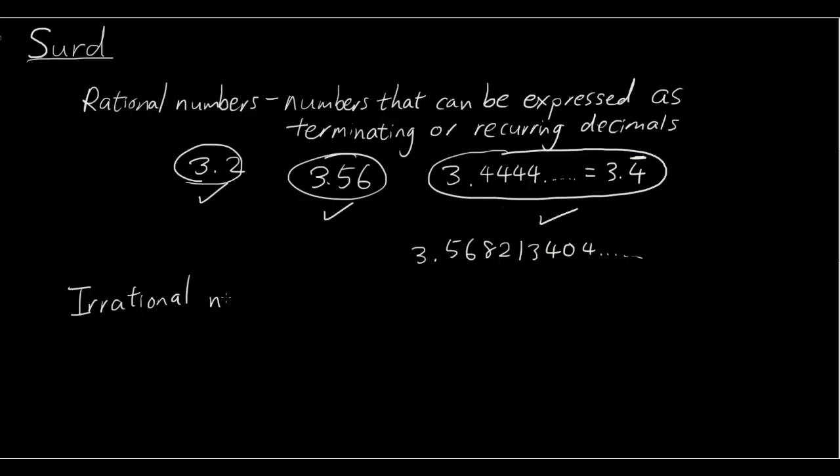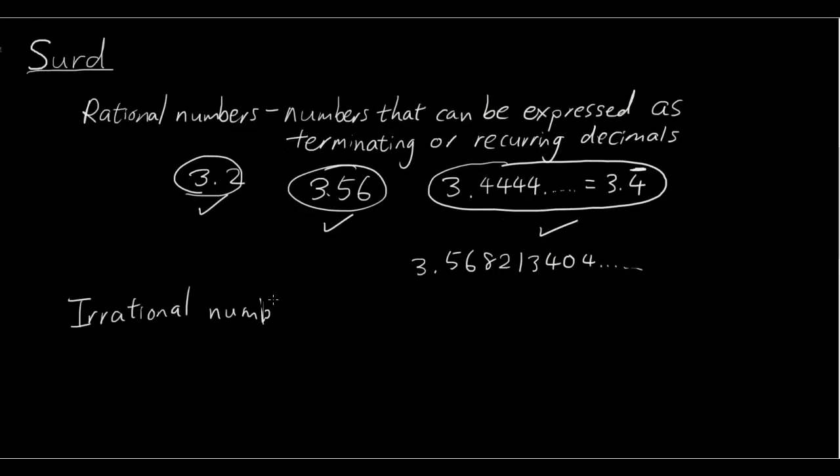Irrational numbers. Irrational numbers are numbers that are not rational, such as this one. You can't express it as a terminating or recurring decimal.